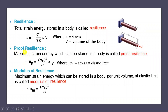Next, we define proof resilience, which is the maximum strain energy that can be stored in the body. The formula for proof resilience is U_p = σe² / (2E) × V, where σe is the stress at the elastic limit. So proof resilience is the maximum strain energy stored in the body up to the stress at the elastic limit.